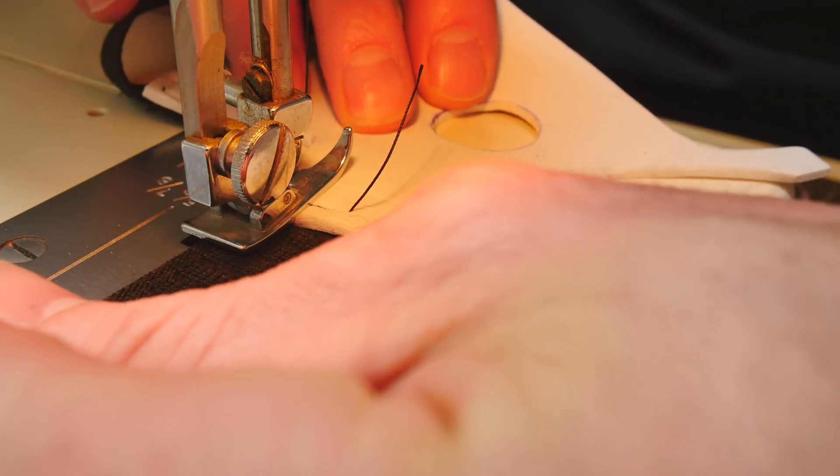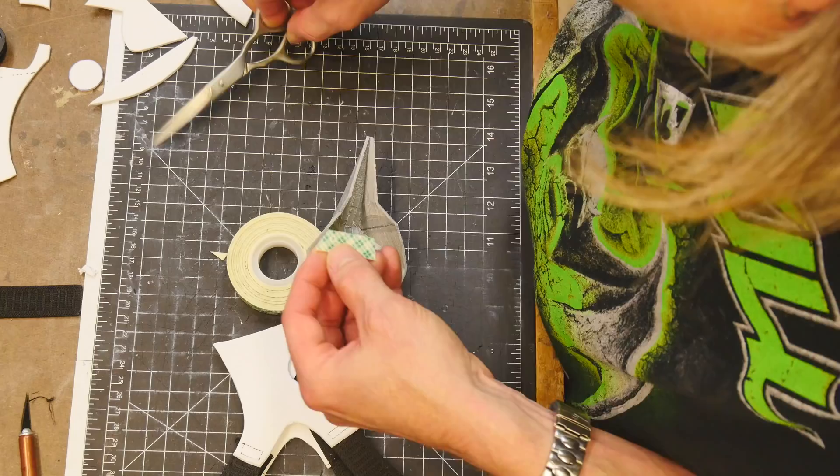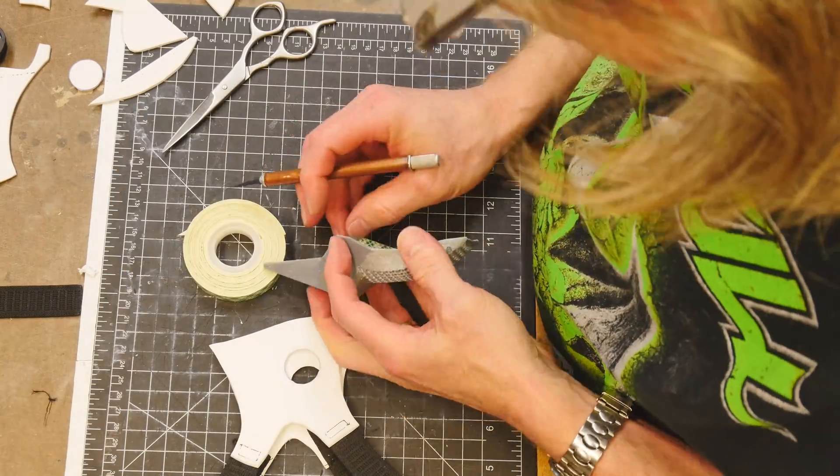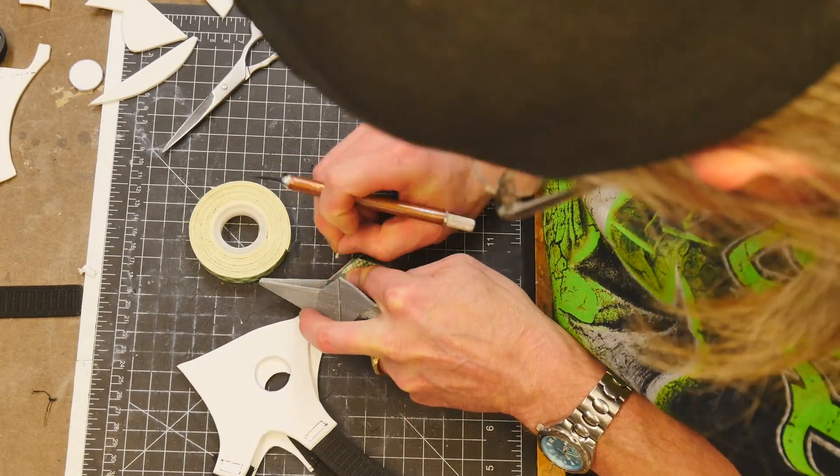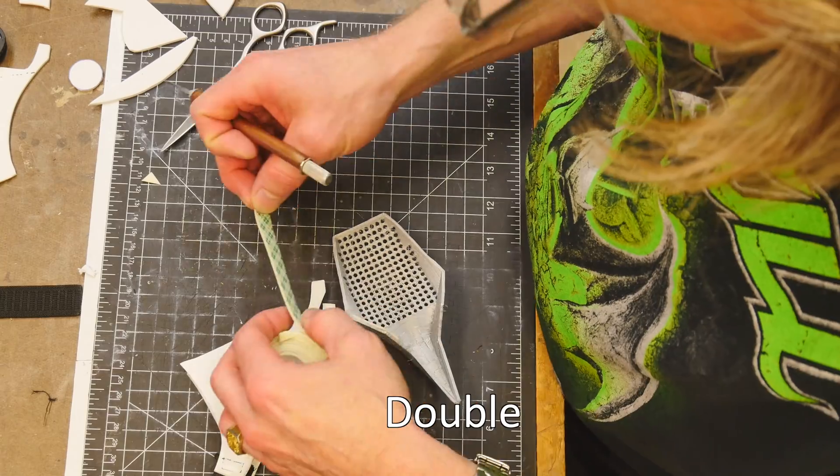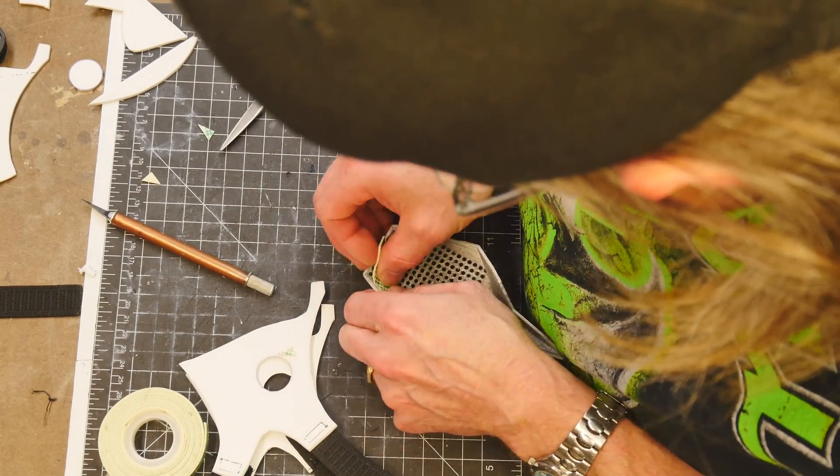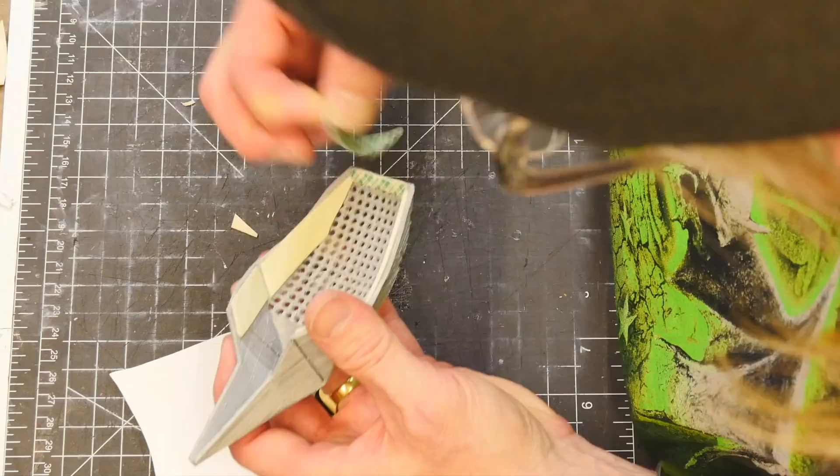At this point we want to do a test fit to see if things are going to start to work out in terms of the side pieces and how they get mounted onto the mouth and nose piece. I'm using some double-sided sticky tape to temporarily attach the foam onto the printed part.